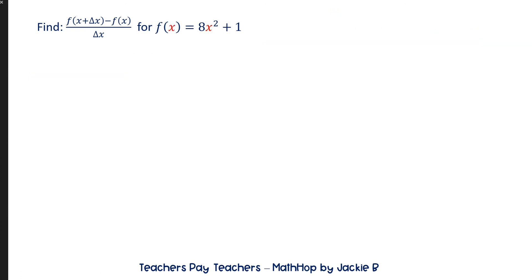All right, we said we're going to go ahead and put in x plus delta x everywhere we see an x in the equation. So that's going to be 8 times the quantity x plus delta x squared. Make sure to put this in parentheses because you will have to square a binomial. And then don't forget the plus 1. The plus 1 was in the original function. It has to be in your answer as well.